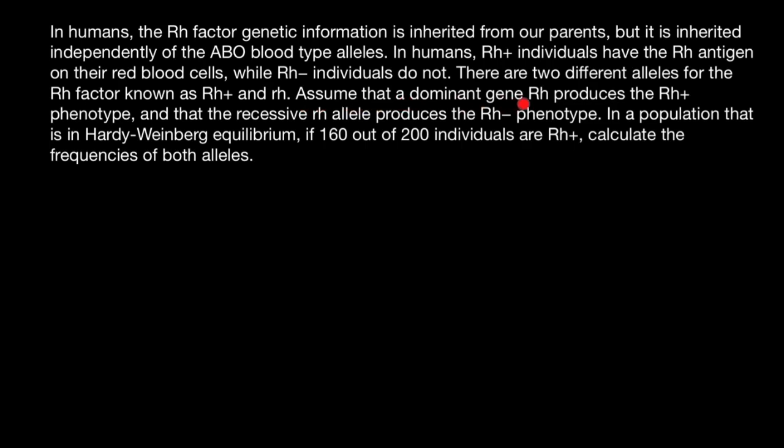Assume that a dominant gene Rh produces the Rh positive phenotype and that the recessive Rh allele produces the Rh negative phenotype. In a population that is in Hardy-Weinberg equilibrium, if 160 out of 200 individuals are Rh positive, calculate the frequencies of both alleles.